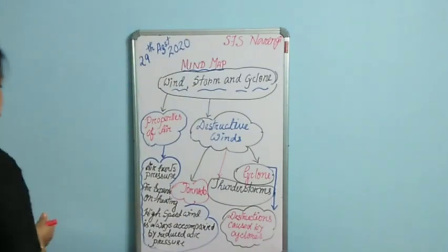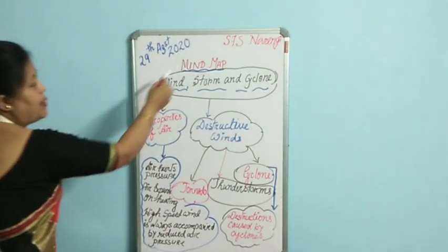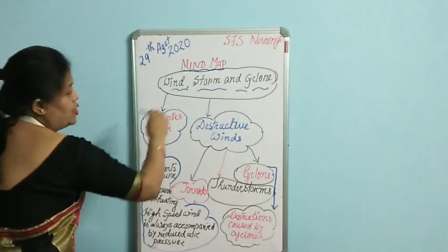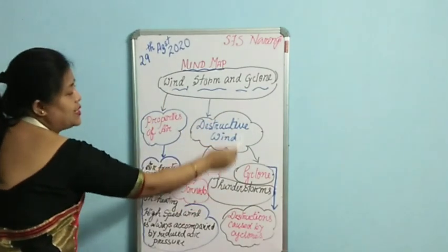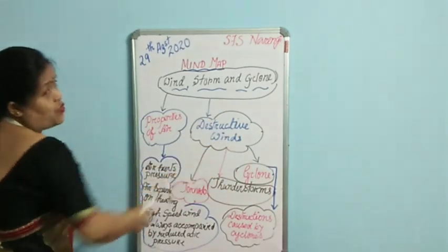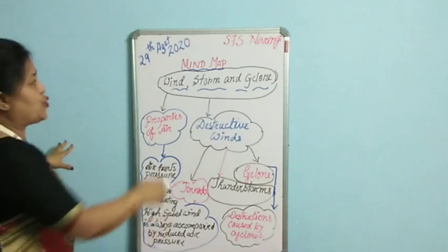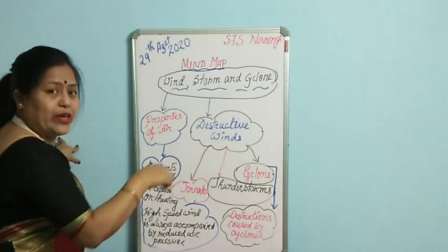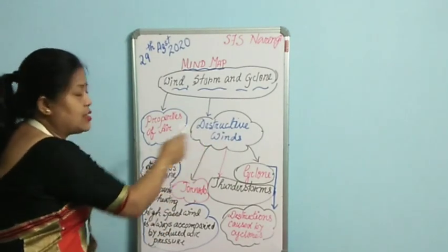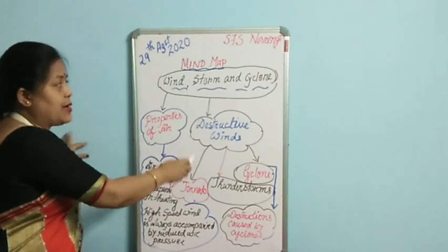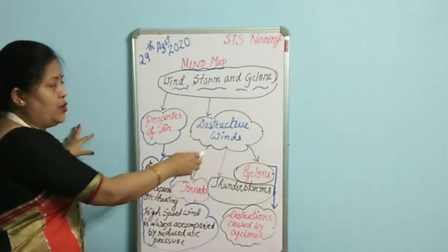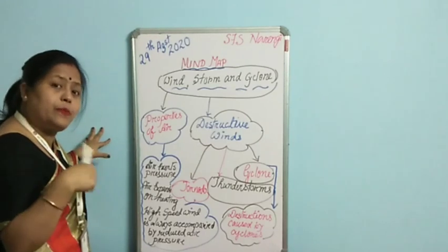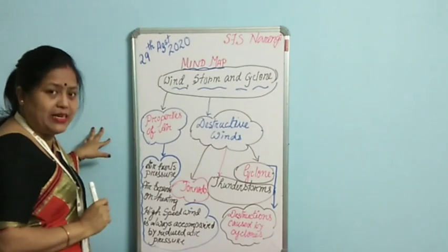Here you can see the mind map of the chapter Windstorm and Cyclone. This mind map is the simplest and easiest form, but while drawing the mind map you can include some drawings as well, related to the concerned topic. You can add drawings to make it more effective, which will help you learn the topics very easily.